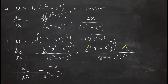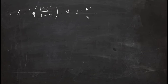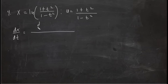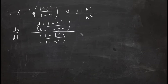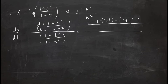Problem number four: x equals ln of (1 + t²)/(1 − t²). Here u = (1 + t²)/(1 − t²). To find the derivative of x with respect to t, we compute the derivative of u (a quotient) over u itself. Applying the quotient rule: denominator (1 − t²) times derivative of numerator (2t), minus numerator (1 + t²) times derivative of denominator (−2t).